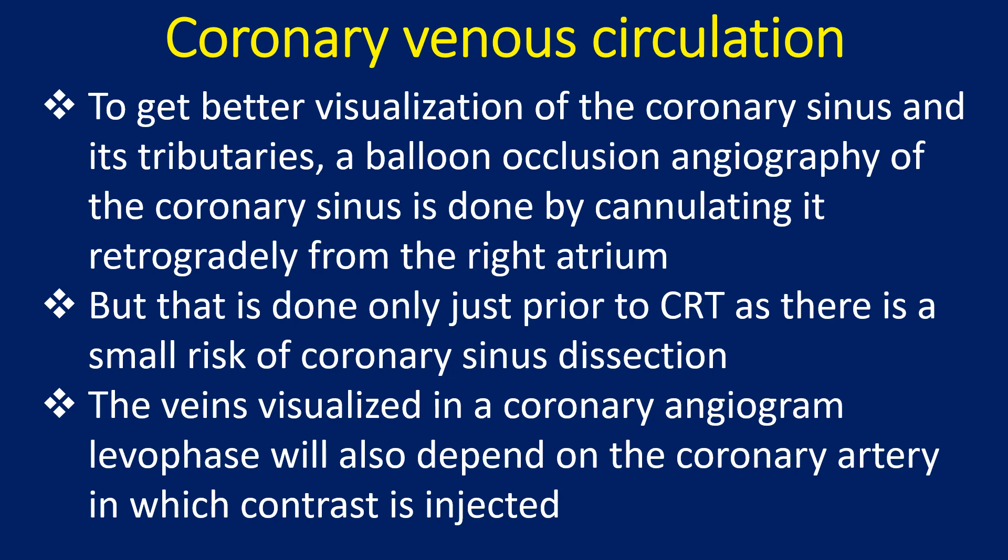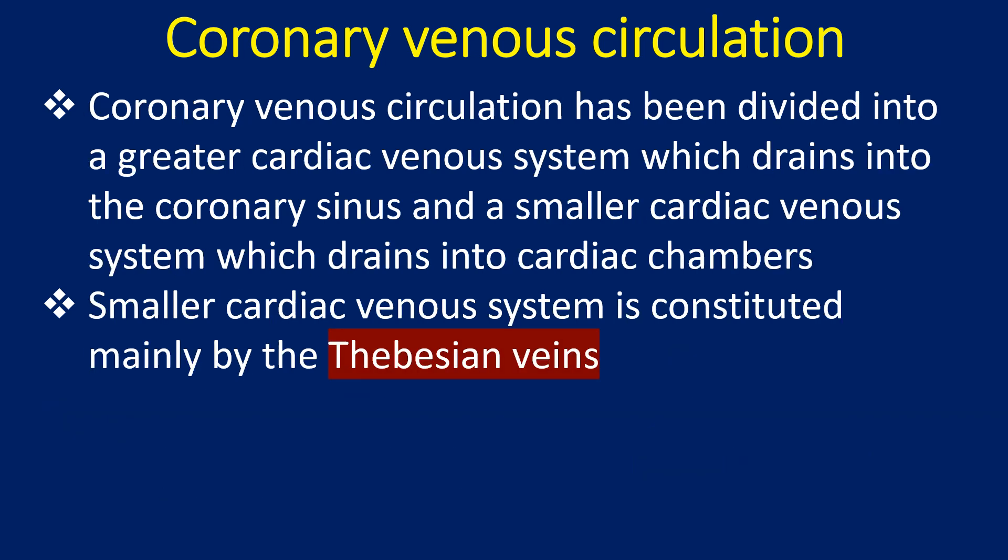The veins visualized in a coronary angiogram levophase will also depend on the coronary artery in which contrast is injected. Coronary venous circulation has been divided into a greater cardiac venous system which drains into the coronary sinus, and a smaller cardiac venous system which drains into cardiac chambers. The smaller cardiac venous system is constituted mainly by the Thebesian veins.